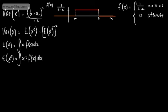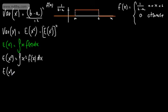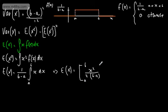Let's first deal with E[X] and apply it to our case. Bringing the constant 1/(b minus a) to the left of the integral sign, we have E[X] = 1/(b minus a) times the integral from a to b of x dx. Integrating by raising the power and dividing by the new power gives x squared over 2, evaluated from a to b.